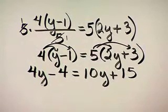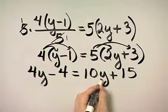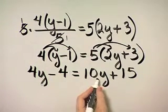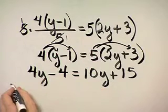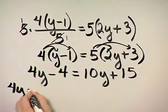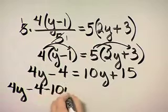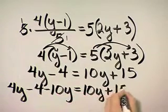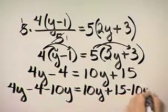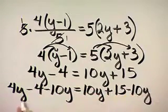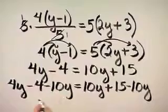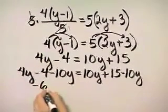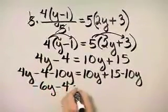Let's go ahead and move variable terms to the left side, just because it's a habit of mine. So I will subtract 10y from both sides. So here's the left side, and I'm subtracting 10y. Here's the right side, and I'm subtracting 10y. And watch what happens, 4y minus 10y, that's negative 6y minus 4.